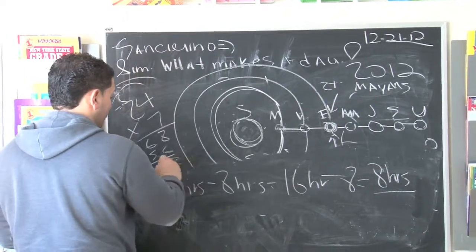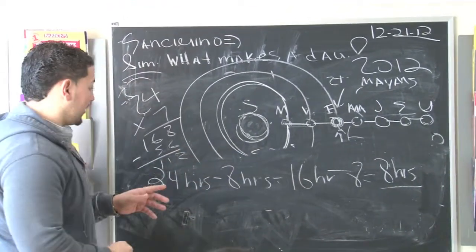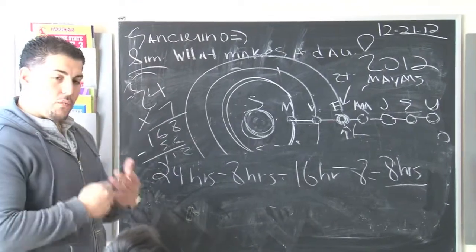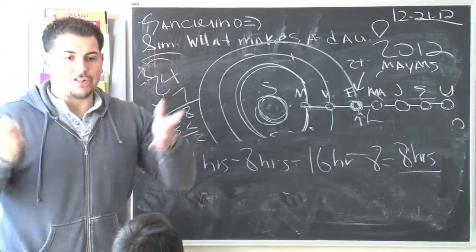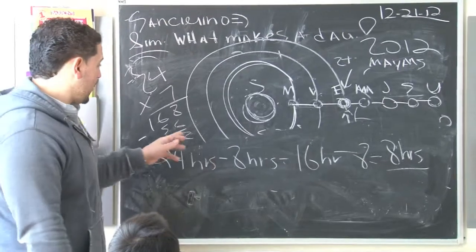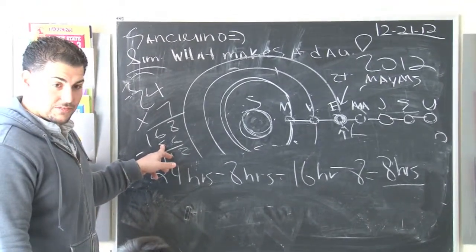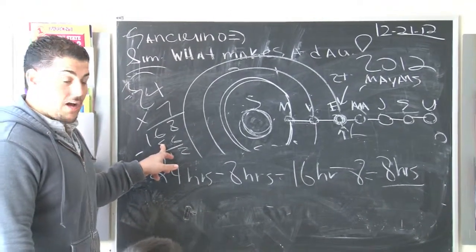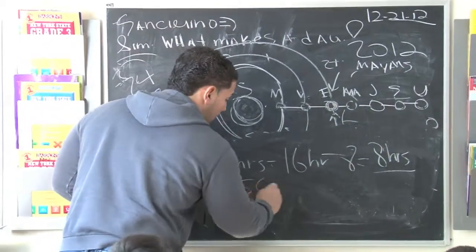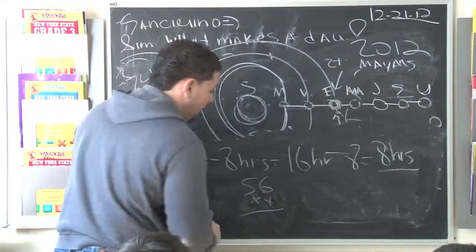So minus 56 from that, what do we got? We got 112. So imagine, really in a week, we're only awake 112 hours. Whoa. But in a week, you sleep 56 hours. Right now, if you do 56 times 4, what?